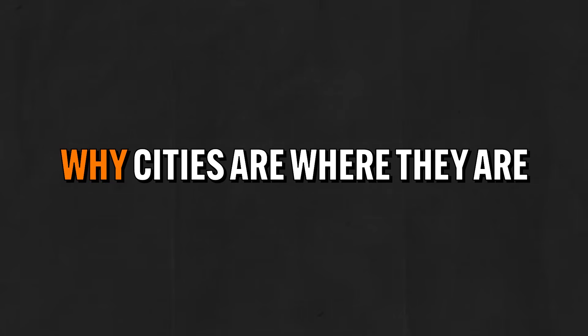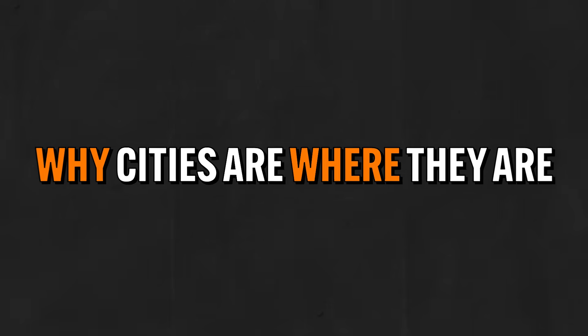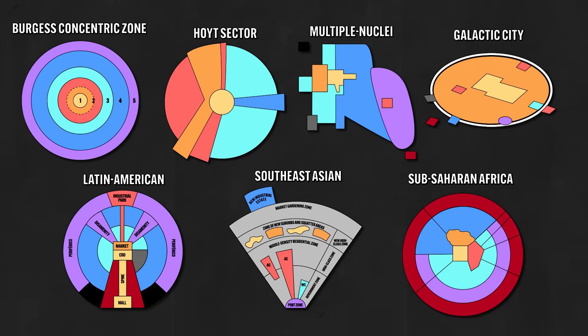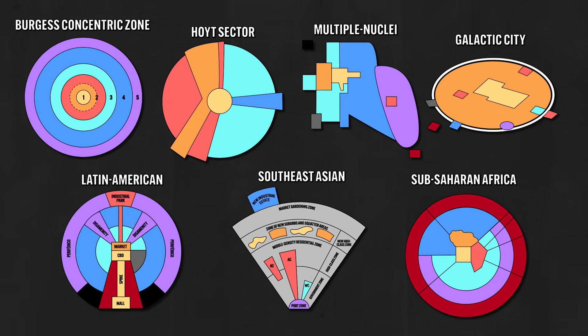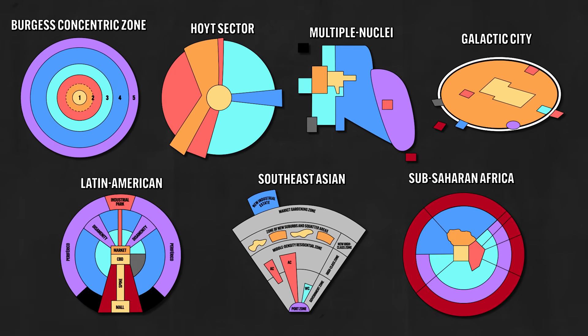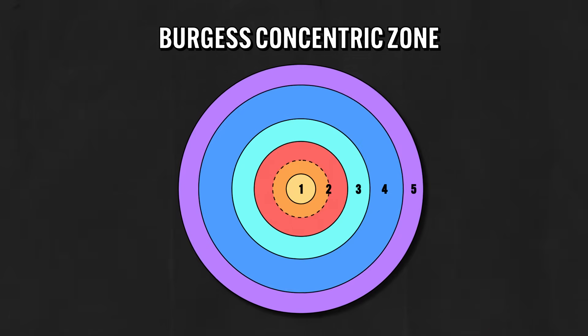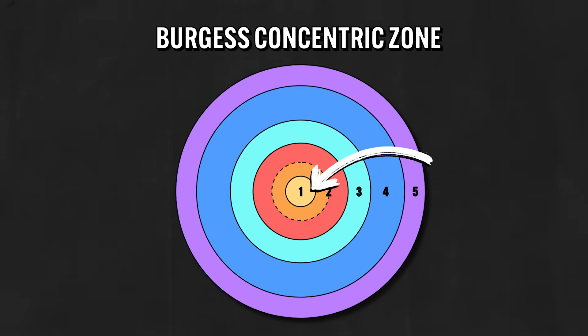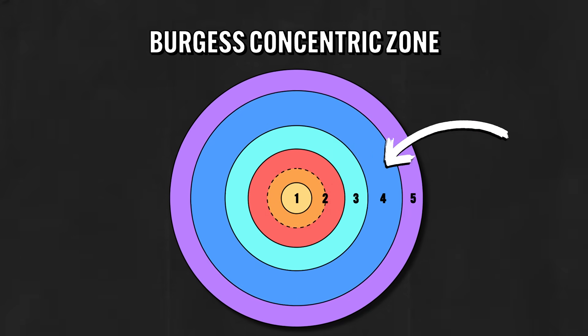Throughout this unit we've been talking about why cities are where they are. And in the last video, I talked about all those urban models which try to explain why cities themselves are spatially arranged in the way that they are. Those models basically said that you can understand the layout of a city if you know where most of the business takes place, and the main phenomenon that has changed the shape of cities over time has to do with transportation and communication technologies.